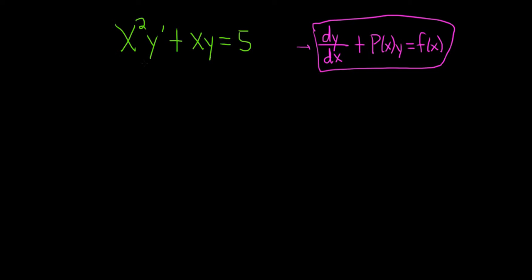So to do that we can divide everything here by x squared. So let's go ahead and start by dividing everything by x squared. That becomes y prime plus 1 over x y equals 5 over x squared.